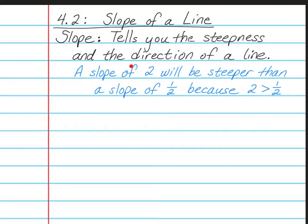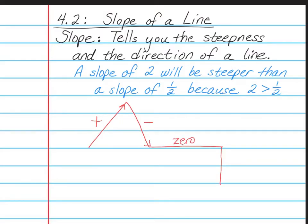We also know the direction of the line. Remember Slope Dude from our video last week — puff, puff, positive. If it goes up from the left to the right, it's positive slope. Negative is when it goes downhill, and that's nice, negative. This is zero slope because Slope Dude is having zero fun. And if we have a straight up and down line, it is undefined. So the direction is either positive, negative, zero, or undefined.